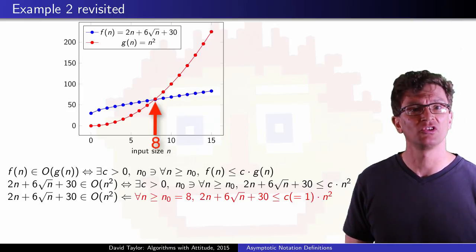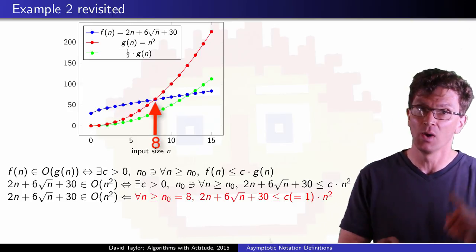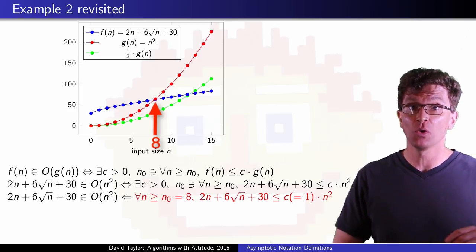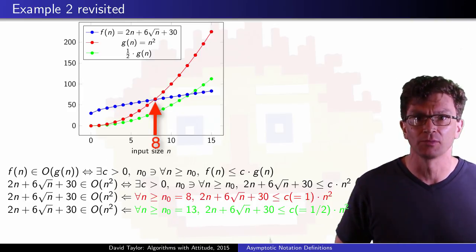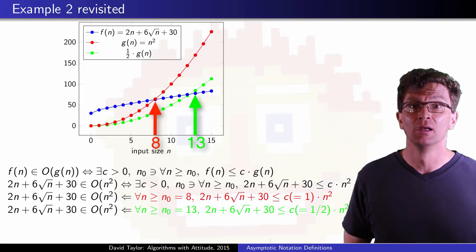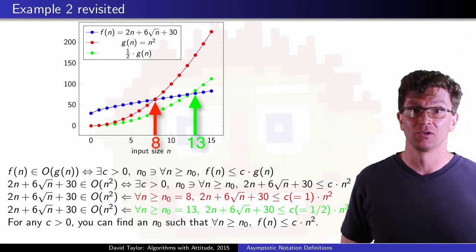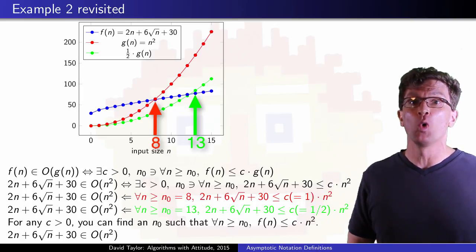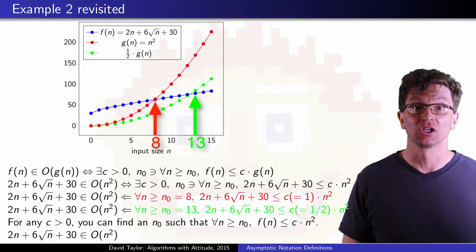How important was our choice of c here? What would have happened if I had chosen c = 1/2? By the way, I should point out c need not be an integer. That's pretty important here. Well, if I chose c = 1/2, once again, cheating and just using pictures to sort of pretend I proved something, it seems that for n at least 13, f(n) ≤ 1/2·n². And it turns out that it doesn't matter what constant I pick here. For any constant greater than 0, there's some n₀ that will force the big O definition through. This is going to be the basis for another asymptotic definition, little o.